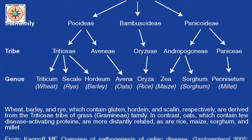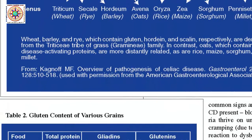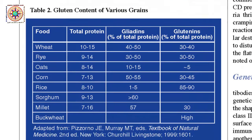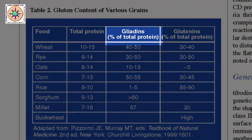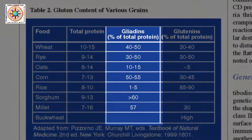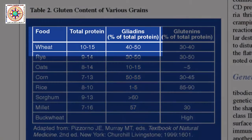The second figure on this page shows the gluten content of various grains. Gluten is not a single protein, but a family of proteins which include gliadins and glutenins. Interestingly, it's not the glutenins but the gliadins that seem to be more of a problem. Of all these foods, wheat has one of the highest levels of gliadins.